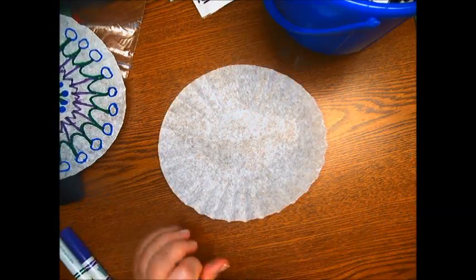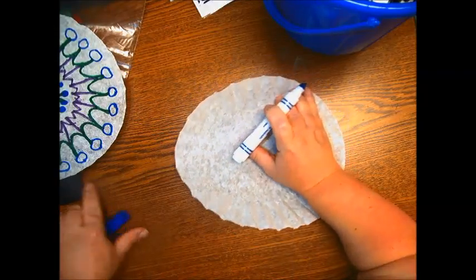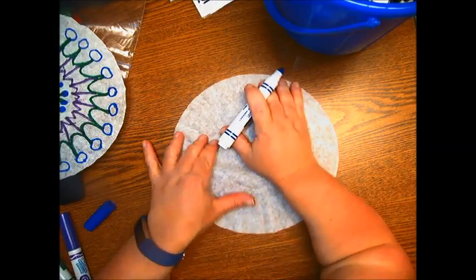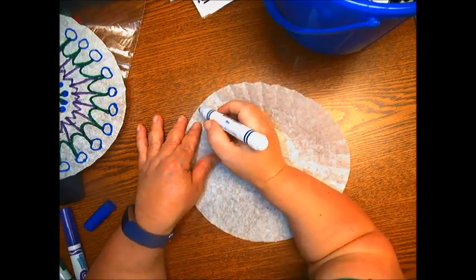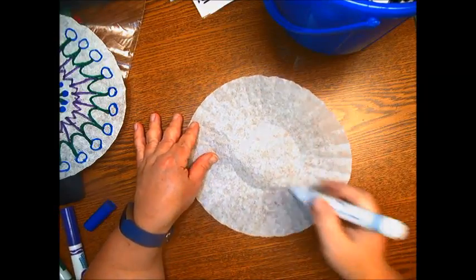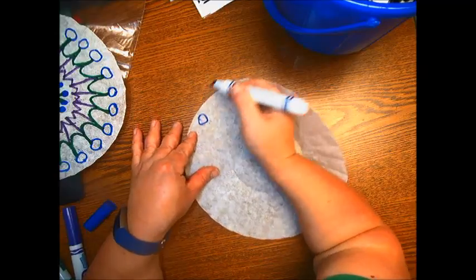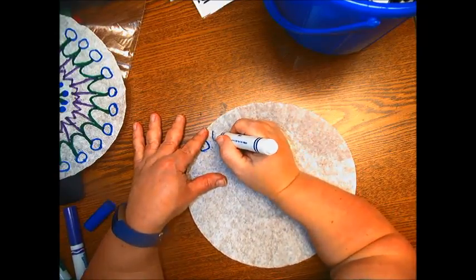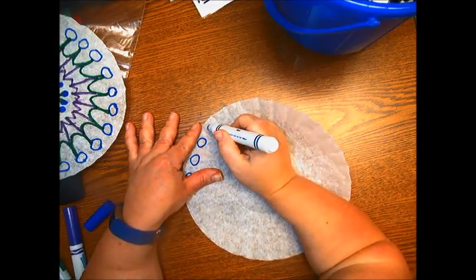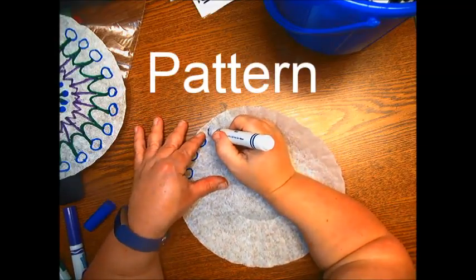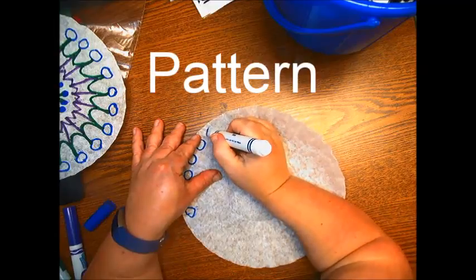What I did first was I used the blue. You can use whatever color you want as long as it's none of the no-no colors. Then you're going to draw a shape or a line and make sure it goes all the way around. I did blue circles going all the way around my whole coffee filter.